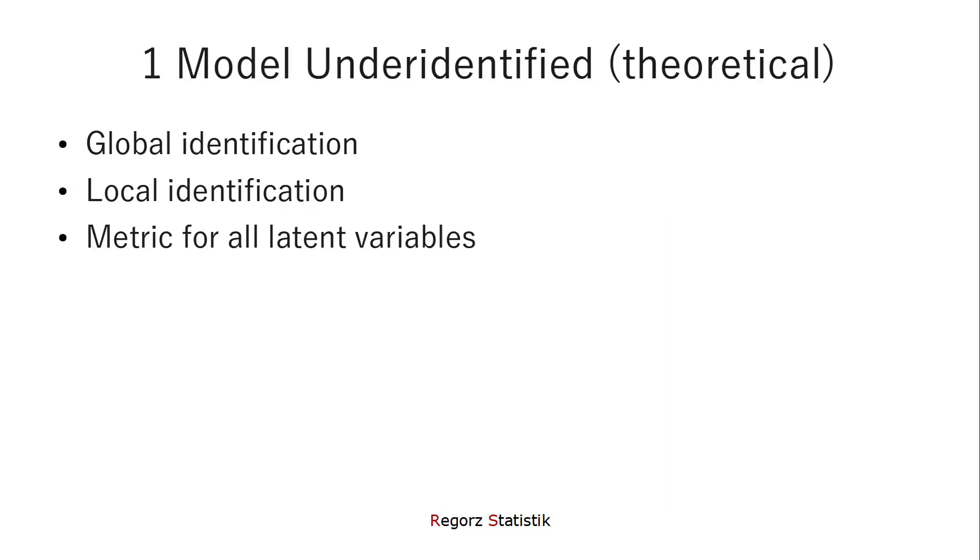The first is that you have a model that is theoretically under-identified. When it comes to model identification, we need global identification. So we need enough pieces of empirical information to estimate all parameters we want to estimate in our model. Then we need local identification. So for each part of the model, we need enough empirical information. And we need a metric for all latent variables.